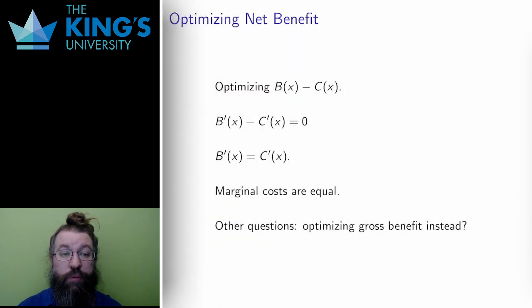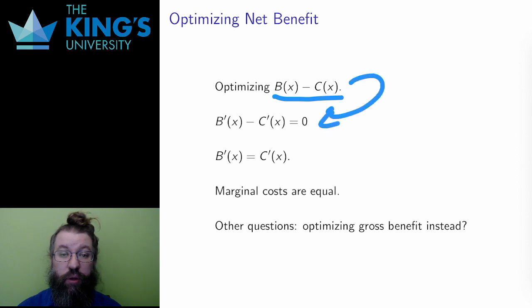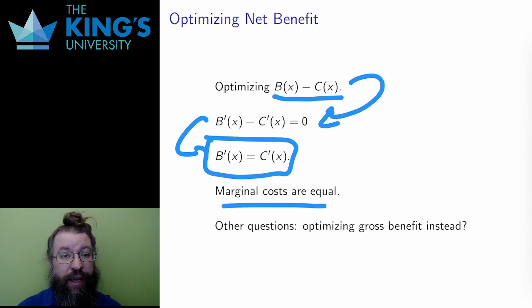So, I want to optimize the net benefit, B of X minus C of X. To optimize, I differentiate and set this equal to zero. This equation is equivalent to B' equals C'. The critical points here happen when the marginal cost and the marginal benefits are equal, when the cost for the next unit and the benefit from the next unit are the same. To solve, I have to find the x that makes these marginal values equal.